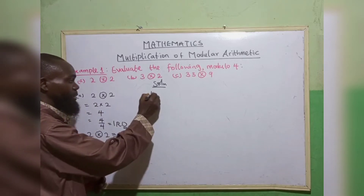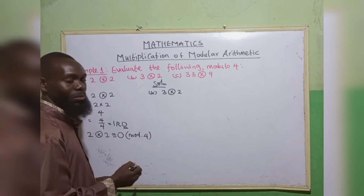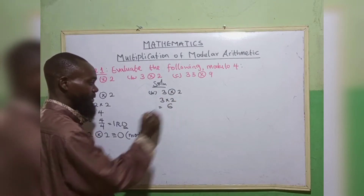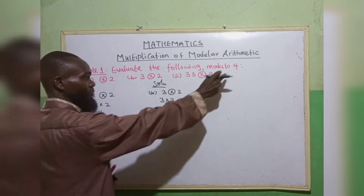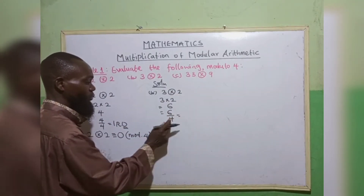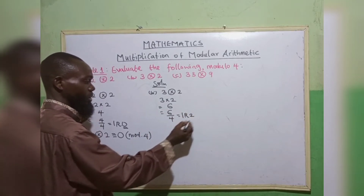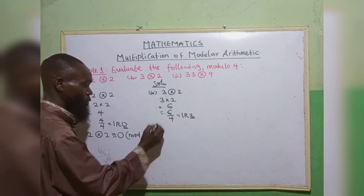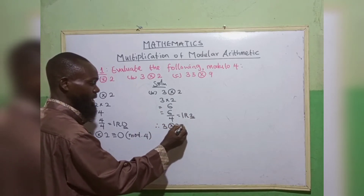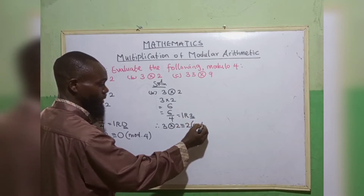The second one: 3 multiplied by 2 gives 6. Since 6 is more than 4, we do 6 divided by 4. So 4 goes into 6, we have 1, remainder 2. So therefore, 3 multiplied by 2 is congruent to 2 in modulo 4.